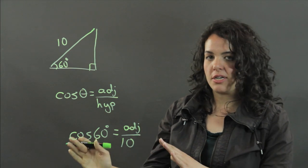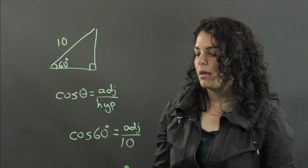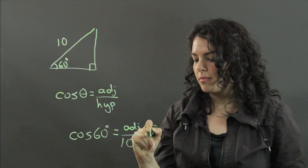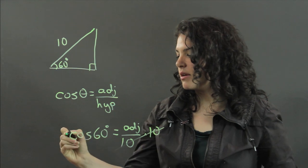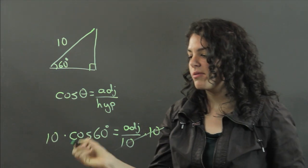So to solve for the adjacent, we multiply both sides by 10. So 10s cancel out here. I'm going to rewrite it here.